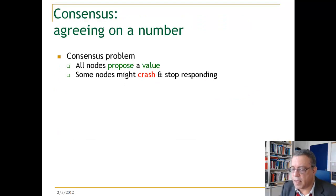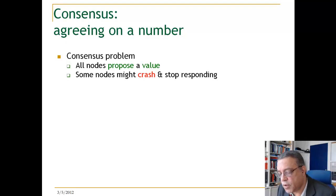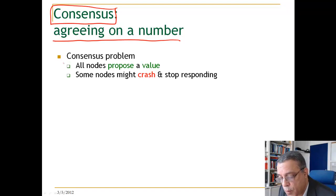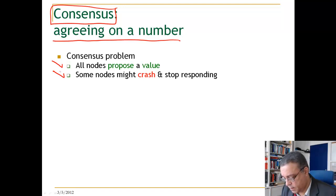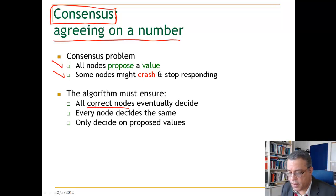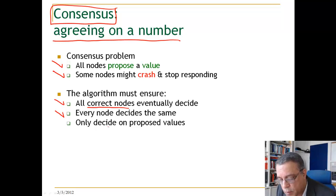What we have been discussing is actually a problem that is at the core of many fault-tolerant distributed systems, which is agreeing — agreeing in this case on a value. This problem is called consensus. A consensus problem is one where all nodes propose a value, some nodes might crash and stop responding, and the algorithm has to ensure that all machines that do not crash — which we call correct nodes — eventually decide on a value, and every node will agree on the same value. The value decided is only one of the proposed values.